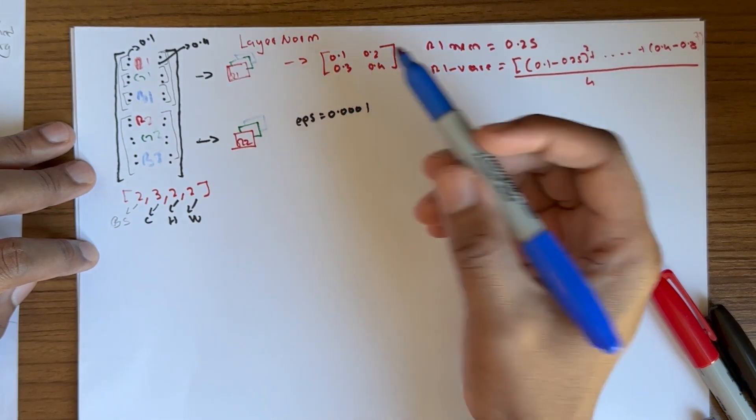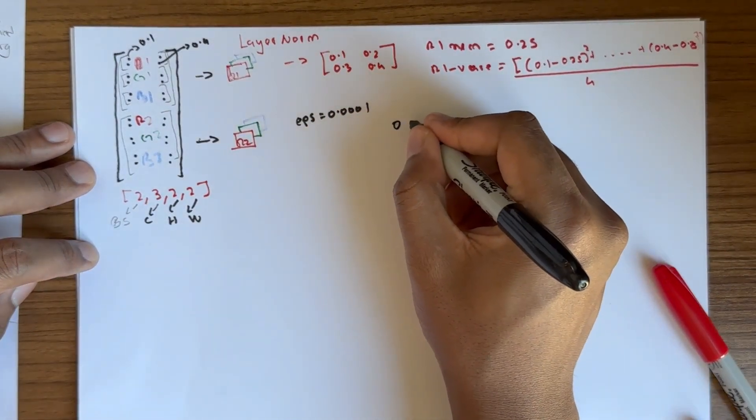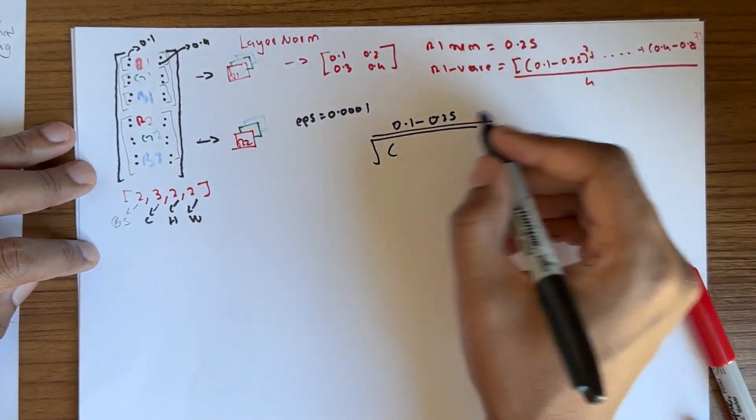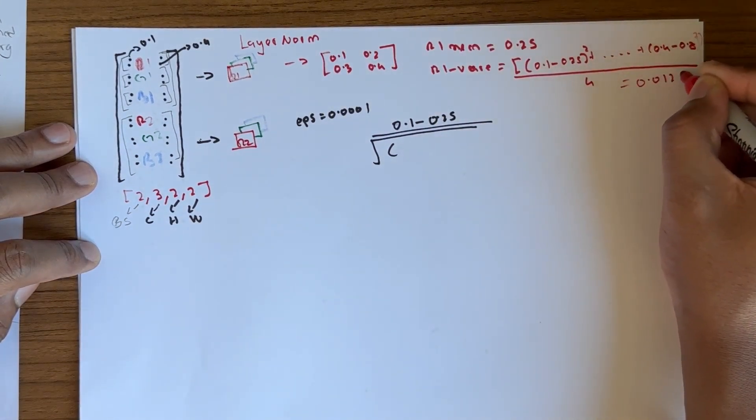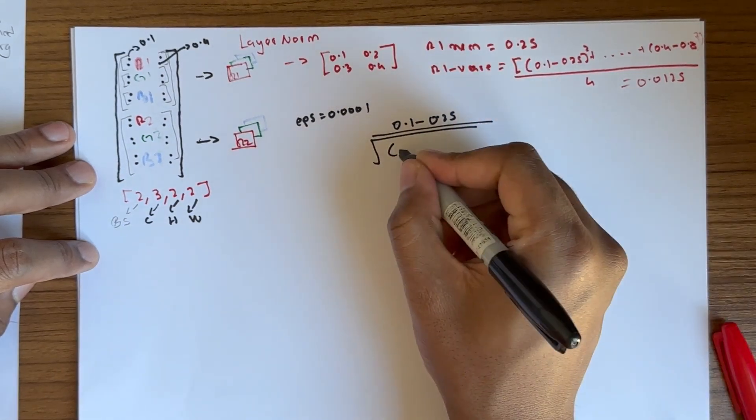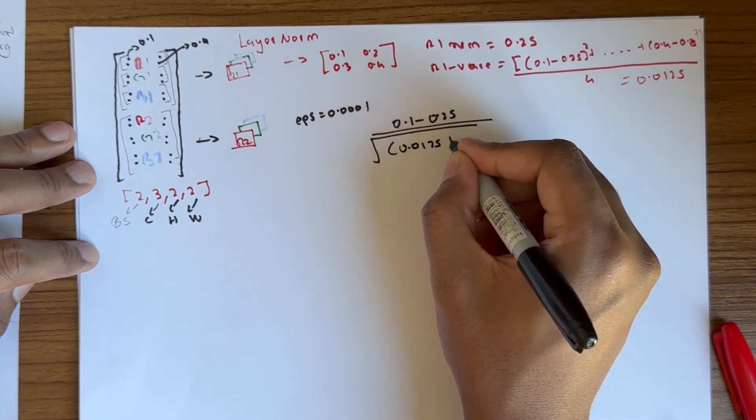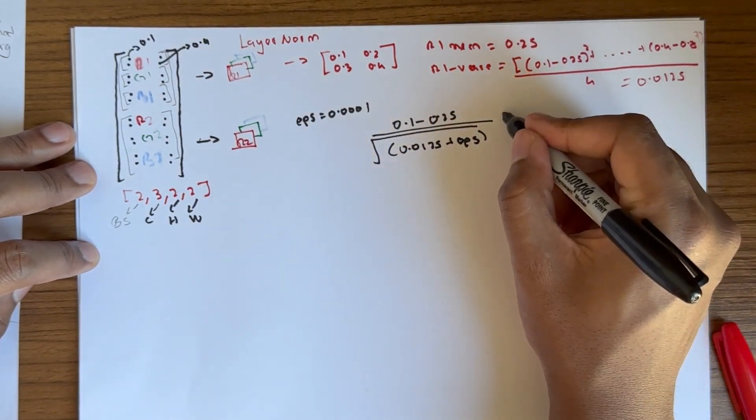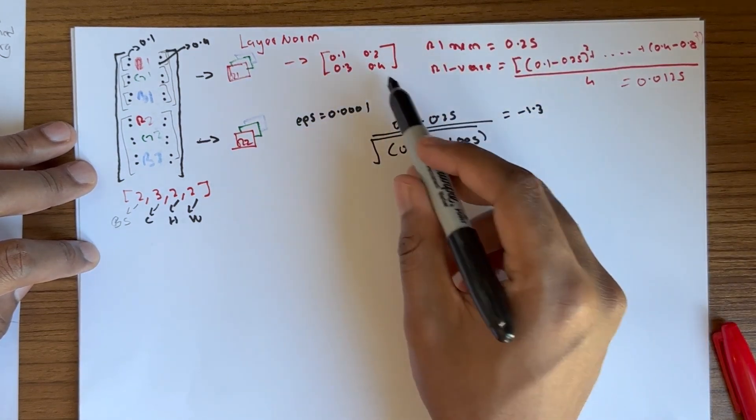Let's normalize 0.1. We take 0.1, subtract the mean 0.25, and divide by the square root of the variance. The variance is 0.0125. We compute (0.1 minus 0.25) divided by the square root of (0.0125 plus epsilon). We add epsilon to avoid division by zero. This gives us minus 1.30. Now 0.1 has been normalized to minus 1.30. You repeat this for all four values.